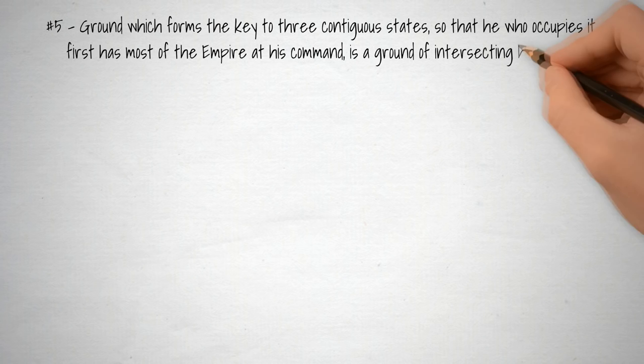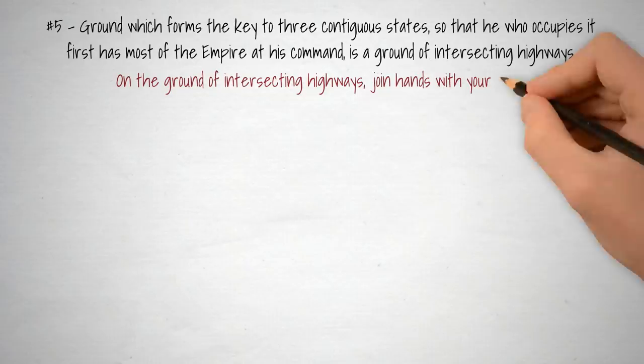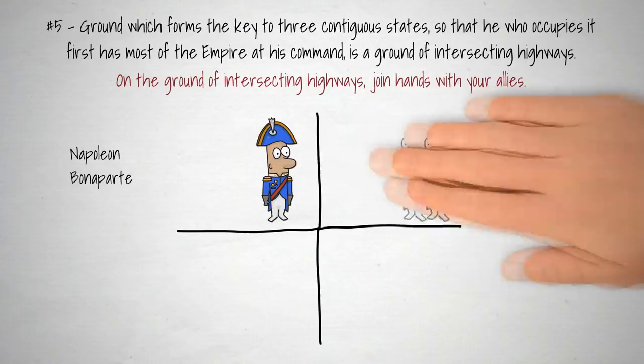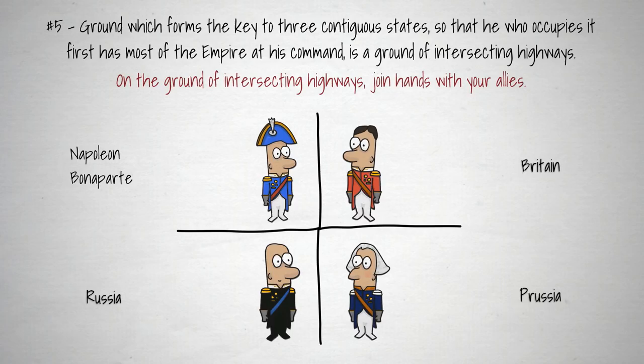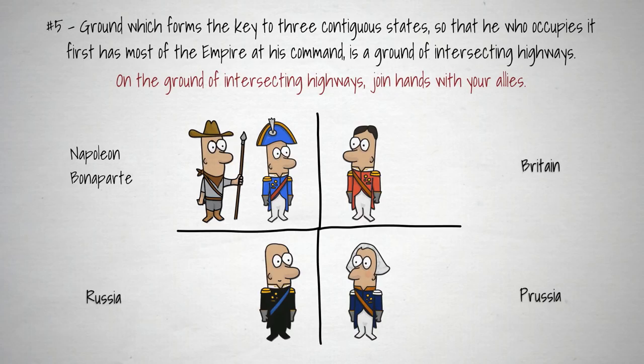As Napoleon expanded his kingdom, he was at war with three other empires — Britain, Prussia and Russia. He headed east into what used to be Poland. Prussia, Austria and Russia had each taken chunks of Polish territory so that it no longer existed as a state. So when Napoleon turned up in Warsaw, many Poles turned to him for help and joined the French against Russia and Prussia. Napoleon used a strategy of isolating his enemies and taking them out one at a time.